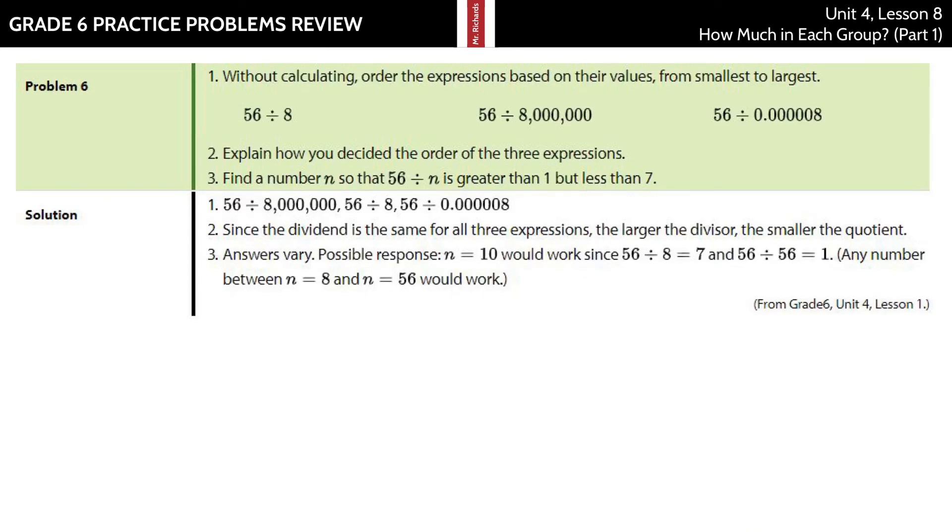And our last question on this review, without calculating, order the expressions based on their values from smallest to largest. Well, 56 divided by 8 is going to be, well, you know, I can't calculate it, so we're not going to say the answer. But 56 divided by a really big number is going to be a really small number. And 56 divided by a really small number is going to be a really big number. And so I guess this one's just going to kind of be in between.